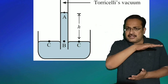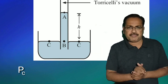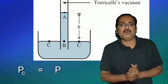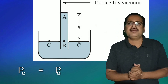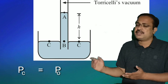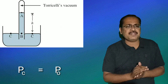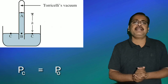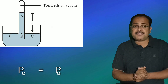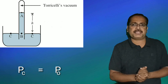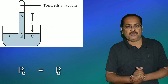Point C is on the surface and is open to the atmosphere, so we can write PC = P0, where P0 is the atmospheric pressure. Therefore the pressure at point C equals atmospheric pressure because it is open to the atmosphere.